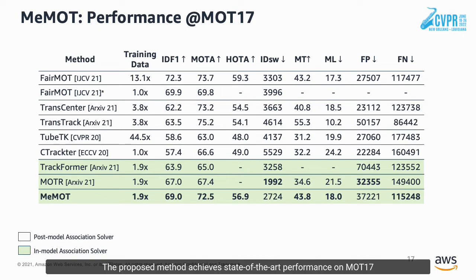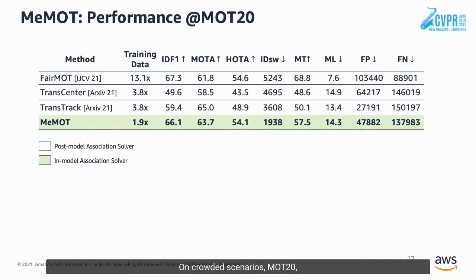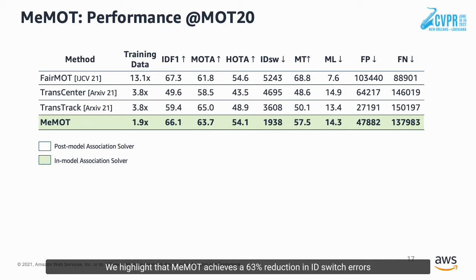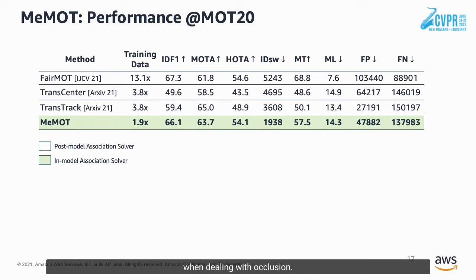The proposed method achieves state-of-the-art performance on MOT17 compared to other transformer-based methods and methods without extra post-processing. On crowded scenarios, MOT20, which is challenging with more severe occlusions, MAMOT achieves comparable performance with state-of-the-art methods. We highlight that MAMOT achieves a 33% reduction in ID-switch errors, a key metric for many real-world tracking applications. This shows the advantages of a learned association solver when dealing with occlusion.